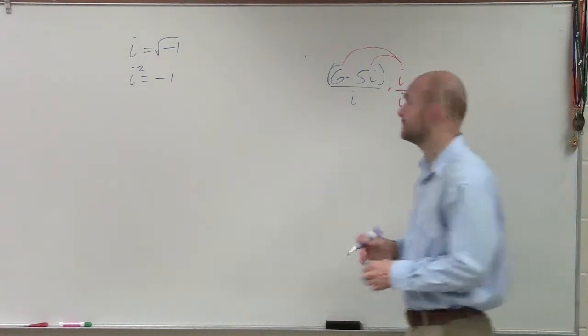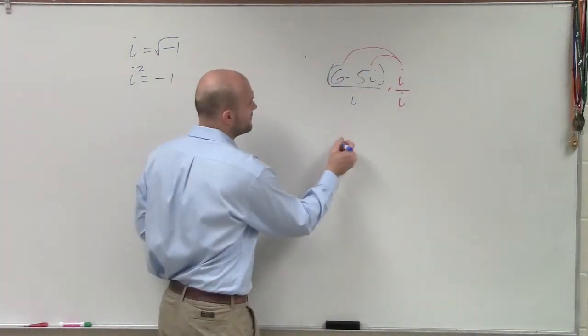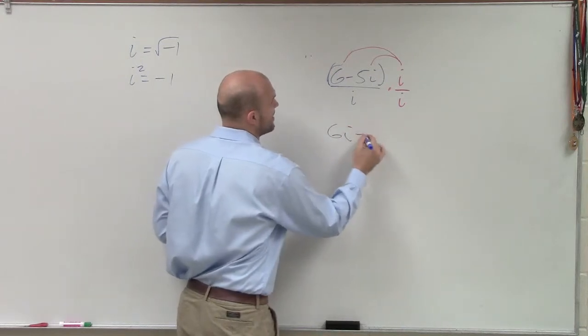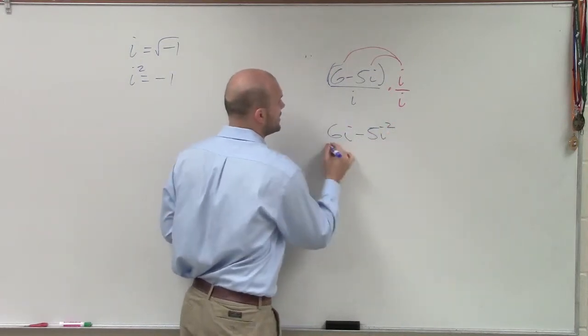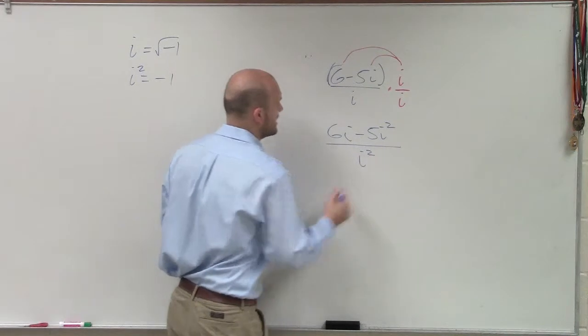I'm still going through. There's no mistakes, no. So therefore, I have 6i minus 5i squared over i squared.